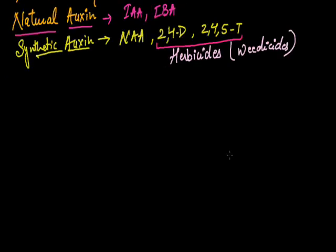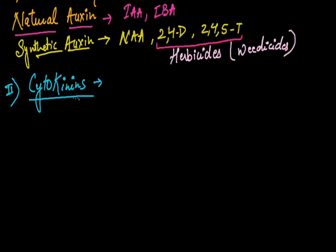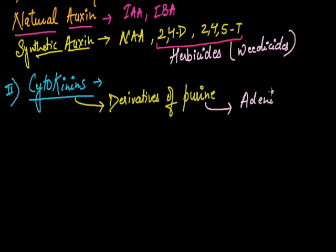Now the next major hormone is cytokinin. As we have already discussed the first class, that is auxin, the next is cytokinin. Cytokinins mainly, they are derivatives of purine, and in the purine of adenine. As we all know, adenine is a purine base. So cytokinins are majorly the derivatives of adenine. These are the plant hormones which promote cell division.